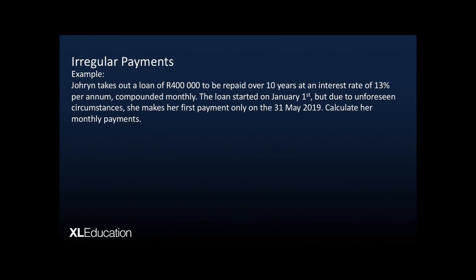Now let's move on to irregular payments. Up until now, everyone has been following the rules — starting to pay off their loan at T1. But sometimes life isn't that simple, and due to unforeseen circumstances, people miss payments on their loans. So how are we going to deal with that?